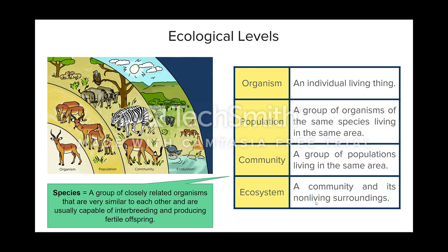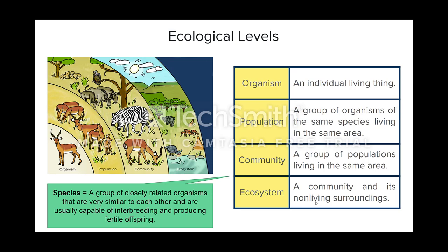If you can produce fertile offspring, then you are the same species. If you cannot, then you are not the same species. Lions and tigers, for example, are two cat species — they can breed and produce something called a liger. However, that liger is not fertile, so we do not consider tigers and lions to be the same species.